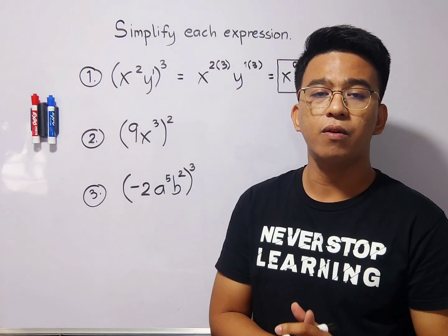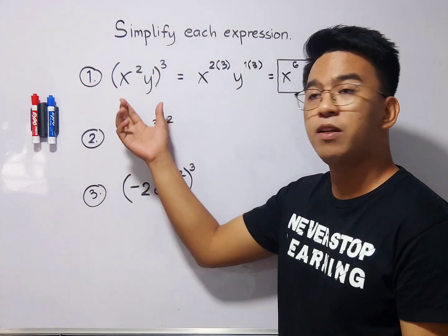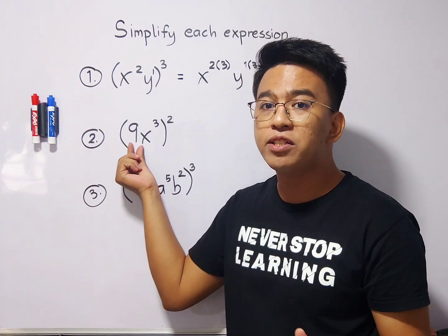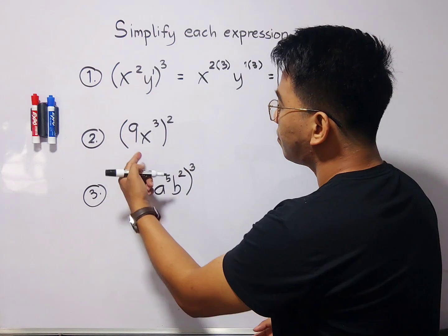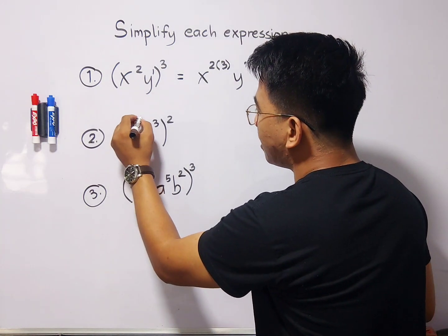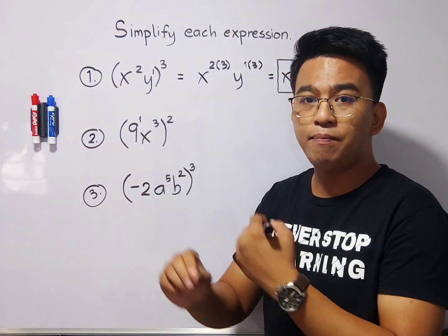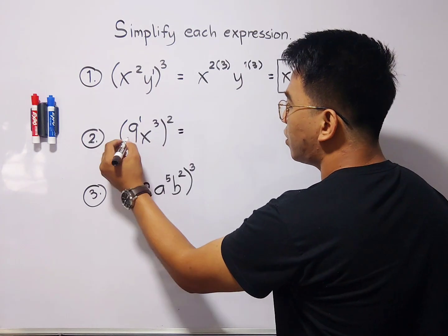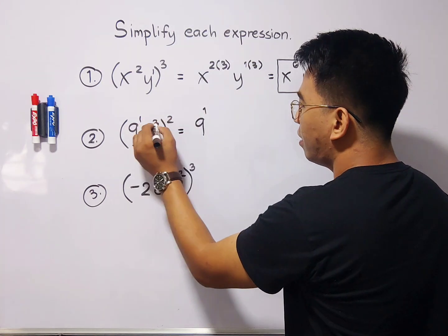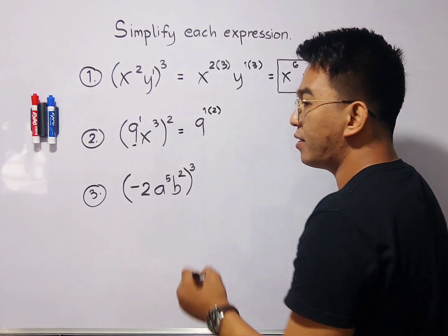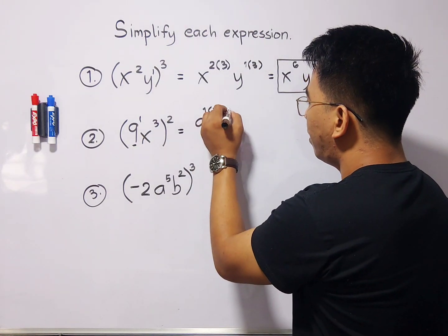For number 2, it's a bit different from the first example because it has a coefficient of 9 — but don't worry, it's the same process. The coefficient 9 has an exponent of 1, while x has an exponent of 3. Step by step: copy the base 9 with exponent 1, times the outside exponent of 2.